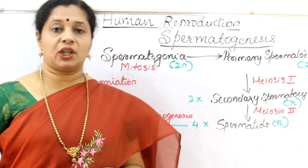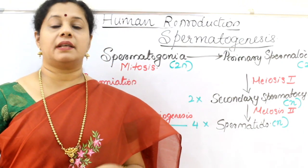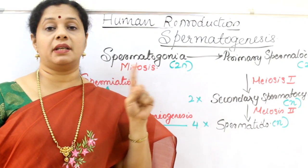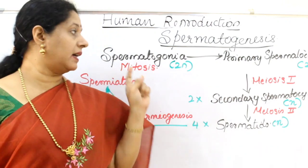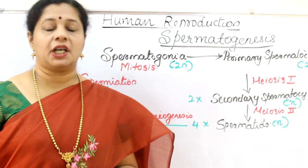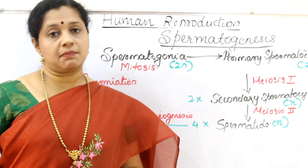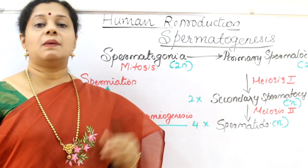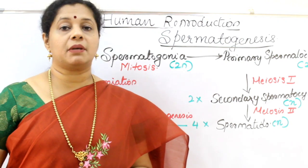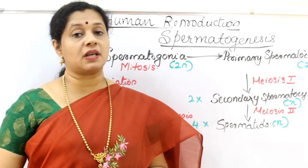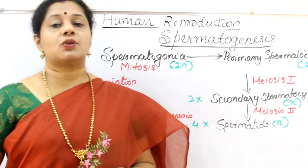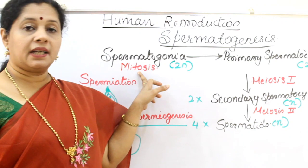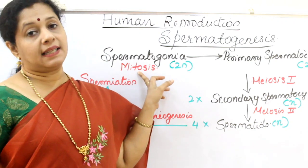Spermatogenesis starts with the spermatogonia cells. Inside the seminiferous tubule, the wall consists of cells called spermatogonia. These spermatogonia are the sperm mother cells, so their ploidy is diploid. They first multiply in large numbers because the number of sperms produced is huge, multiplying by simple mitosis to increase their number.